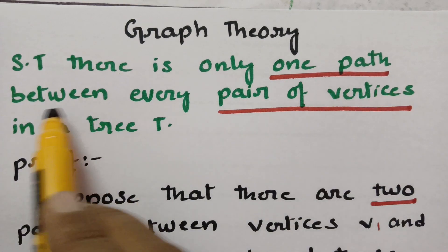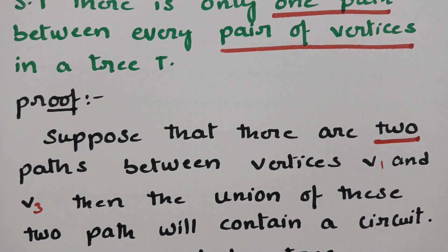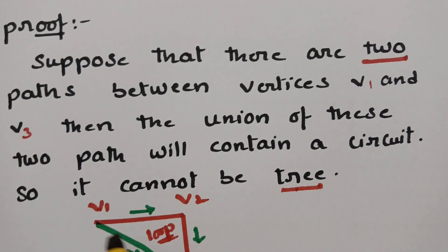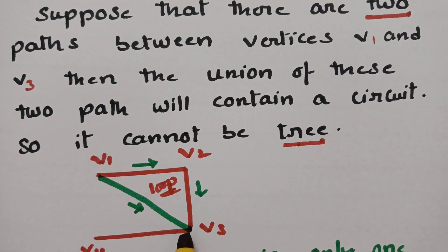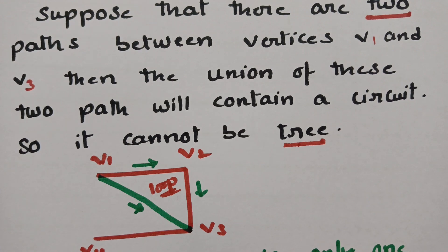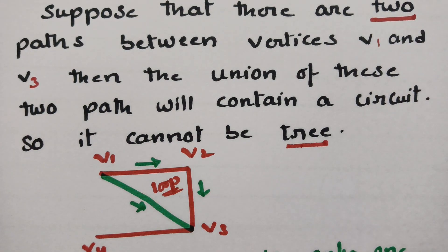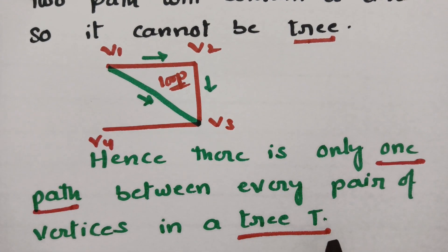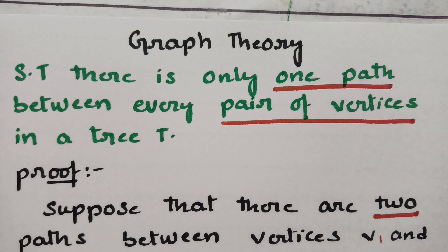Show that there is only one path between every pair of vertices in a tree. If you take any tree with a single path, it will be a tree. If you take two paths between the vertices — say from v1 to v3 — and connect another path, it becomes a circuit. If there is a circuit, cycle, or loop, it can never be a tree. Taking two paths means it cannot be a tree. Hence there is only one path between every pair of vertices in a tree, and this proof is enough for the given statement.